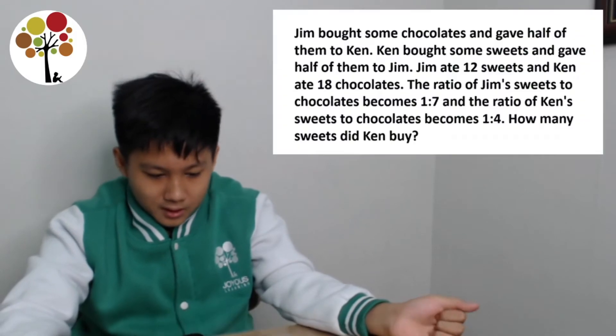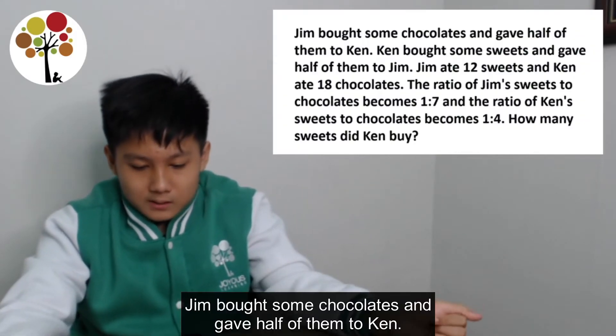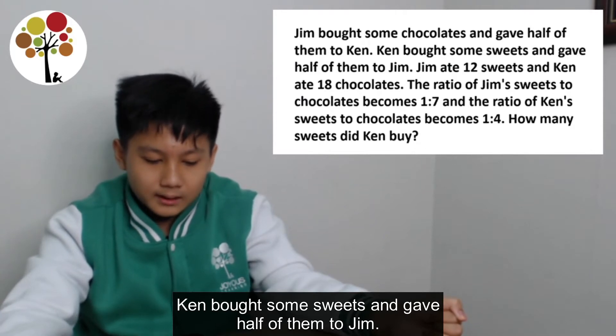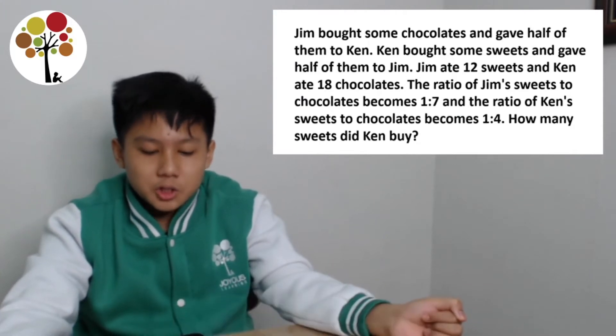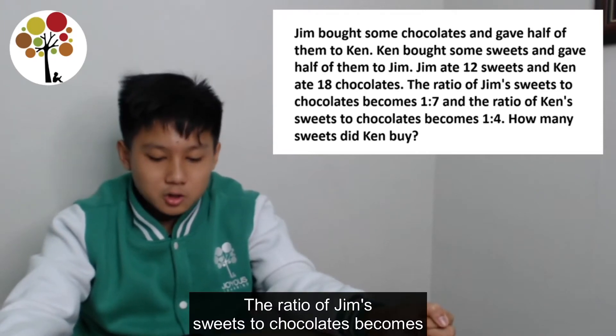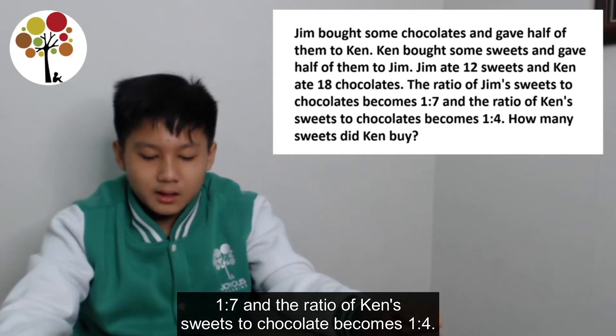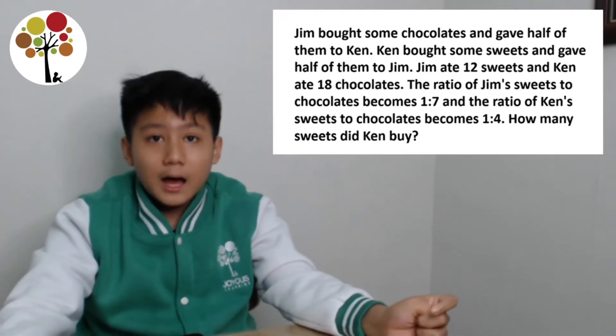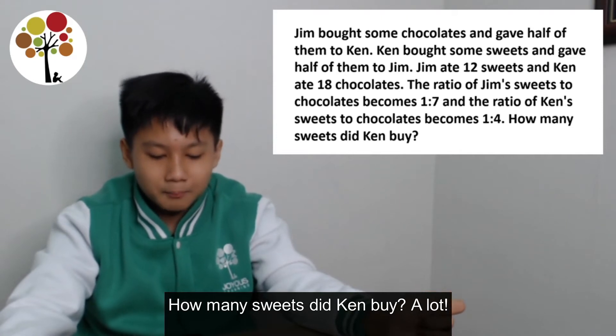So let's start with the question. Jim bought some chocolates and gave half of them to Ken. Ken bought some sweets and gave half of them to Jim. Jim ate 12 sweets and Ken ate 18 chocolates. The ratio of Jim's sweets to chocolates becomes 1 to 7 and the ratio of Ken's sweets to chocolates becomes 1 to 4. How many sweets did Ken buy?